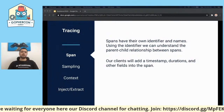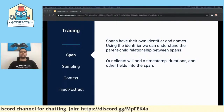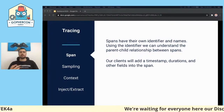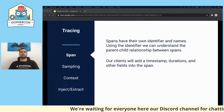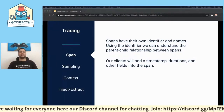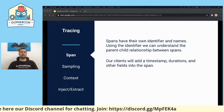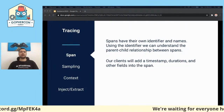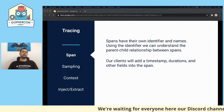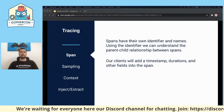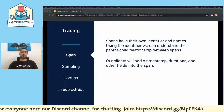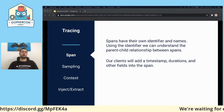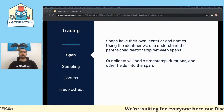Our applications may handle millions or billions of requests. Each request may have a unique trace ID, and their child spans will share the same parent identifier, because spans have their own identifiers and names. Using this identifier, we can understand the parent-child relationship. All clients will add a timestamp, duration, and other fields into the span, so we can understand request durations for services for each request and see the request journey across our multi-service production.